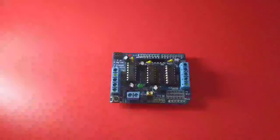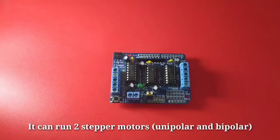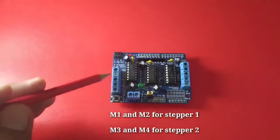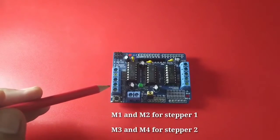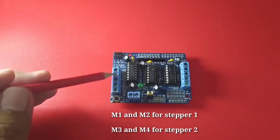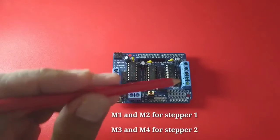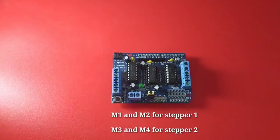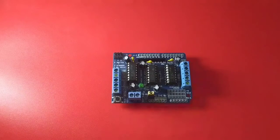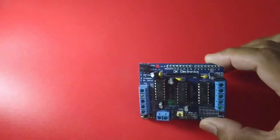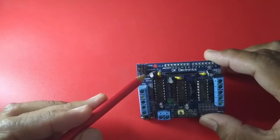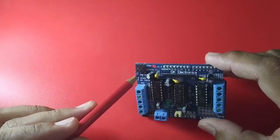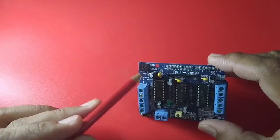It can also run 2 stepper motors, unipolar and bipolar, by using the terminal 1 and 2, M1 and M2 for stepper motor 1, and the terminal block M3 and M4 for the second stepper motor. While the servo motors can be run using these pins, which is the servo 1 and servo 2, which is connected to digital pin 9 and 10.